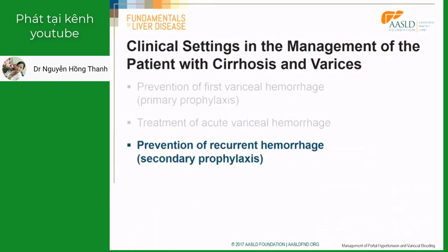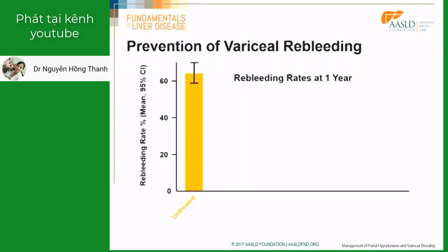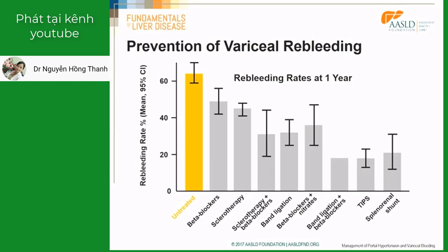We move now to the last part of this module, which is the prevention of recurrent variceal bleeding. If patients after a variceal bleeding are left untreated, the probability of rebleeding during the first year is 60%. So we have to start the patient on a treatment to prevent rebleeding. Over the years several treatments have been proposed, and the most effective one is the combination of band ligation and beta-blockers, which is the current recommendation as initial therapy to prevent rebleeding.